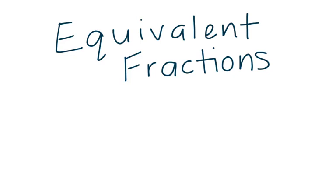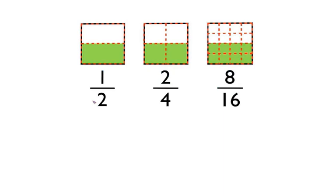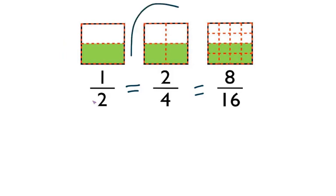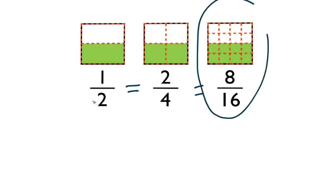So let's remind ourselves, what are equivalent fractions? On your screen, I put three examples of fractions that are all equivalent to each other. If we look at the whole, we can see each fraction has a whole square, but that whole is split into different numbers of pieces. In one half, our whole is split into two pieces with one shaded. In two fourths, our whole is split into four pieces with two shaded. And in eight sixteenths, our whole is split into 16 pieces with eight shaded.